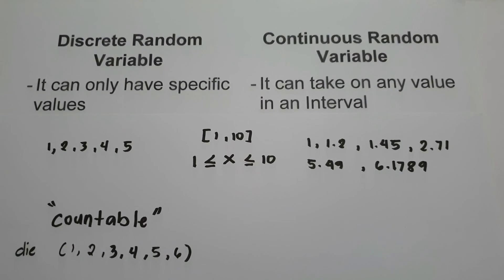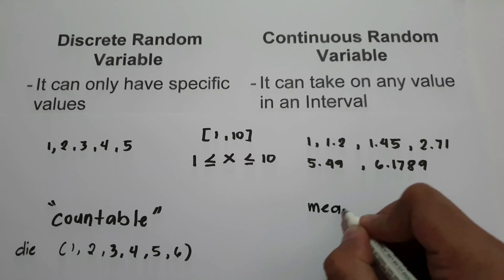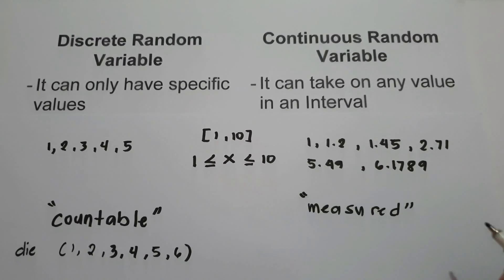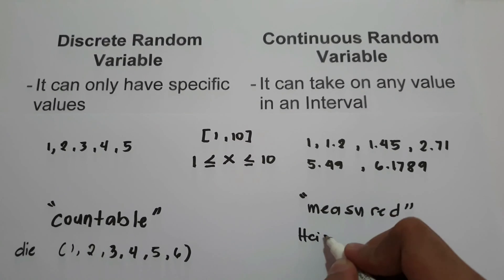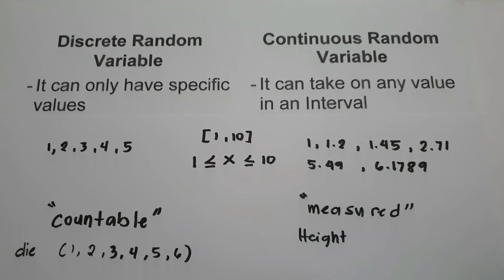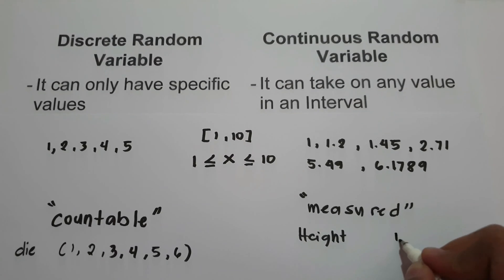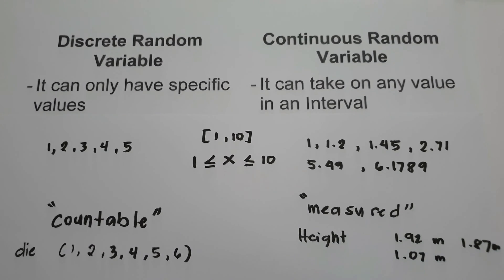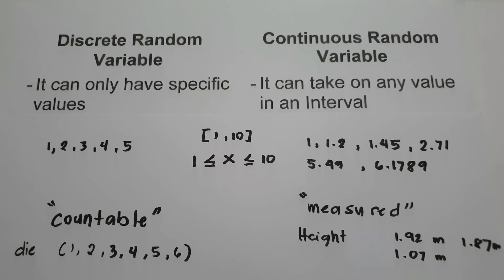While in continuous random variable, those are the data that can be measured. For example, height — the height of a person can be 1.92 meters, 1.87 meters, or 1.07 meters. That is the difference between discrete random variable and continuous random variable. So let's start and let's have an example.